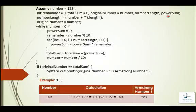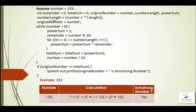We need the number of digits because 153 has three digits, so we raise each digit to the power 3. If it were 15, we would raise each digit to the power 2 instead. So we find the number of digits in the number and run a loop that many times — for 153, the loop executes three times. We also need to add up the sum of all the powers we get. Number length is set by converting the integer to a string to get the digit count — for 153, number length is 3.